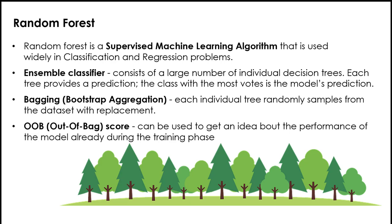Another advantage of bagging is the possibility to calculate the out-of-bag score, which gives an idea of model performance during the training phase. During bagging, some training data rows are always left out of the sample given to a particular tree. The performance of a given tree can then be checked by feeding it those rows not included in its original training sample. This is done for all trees, and the out-of-bag score is computed as the number of correctly predicted rows from the out-of-bag sample. However, the OOB does not replace the need for validation with an independent dataset.